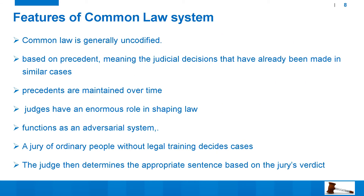Certain common features of the common law legal system: in common law countries, law is generally uncodified — I say generally because we are discussing the purest form. It is based on precedent, meaning judicial decisions already made in similar cases. These precedents are maintained over time and compiled in books such as the All India Reporter and Supreme Court Cases. Judges have an enormous role in shaping law. Common law functions as an adversarial system, with two parties and lawyers pleading for each side. A jury of ordinary people without legal training decides cases in many common law systems — though this feature is not present in India. Judges then determine the appropriate sentence based on the jury's verdict.